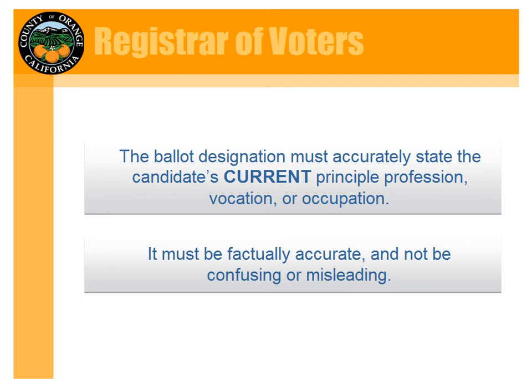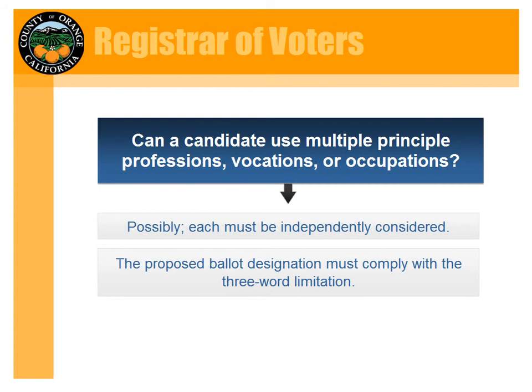Can a candidate use multiple principal professions, occupations, or vocations? Possibly — it all depends on what they are. Each designation needs to be considered independently. How much time does the candidate spend doing the requested designation? Is it current? Is it accurate? If the answer to these questions is yes, then multiple designations can be used. However, the proposed ballot designation still must adhere to the three-word limitation. The only exception to this is in the title of elected officials, which we will discuss later.